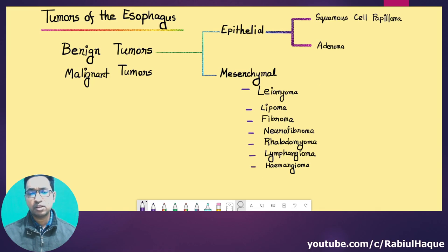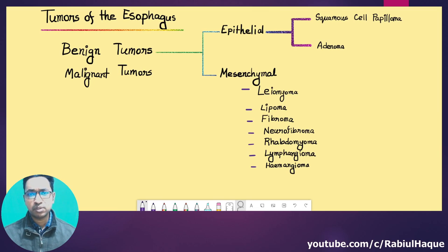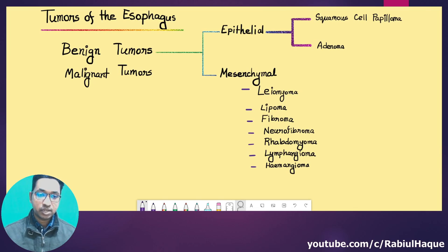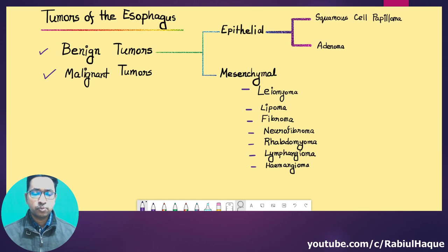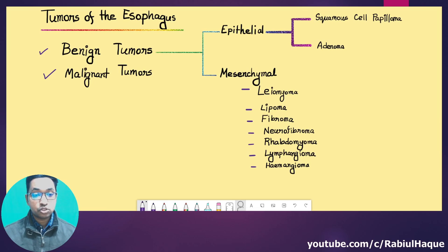The first thing that the examiner may ask you from this topic is: what are the tumors of the esophagus? Recall from my lecture on neoplasia that tumors can be either benign or malignant in nature. Similarly, tumors of the esophagus can be either benign or malignant. One thing to remember: the examiner may ask you which one is more common in the esophagus, and the answer should be malignant tumor. Benign tumors of the esophagus are rare.